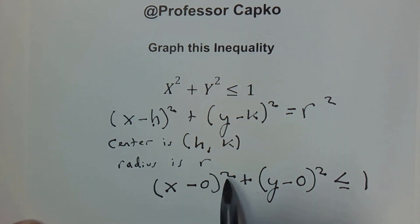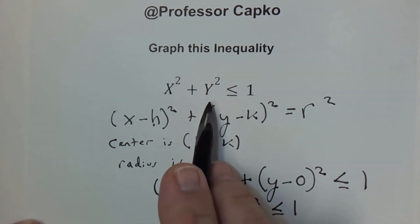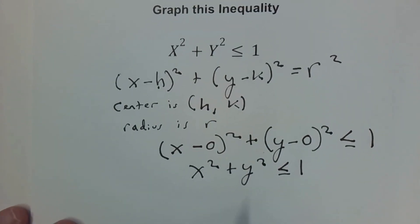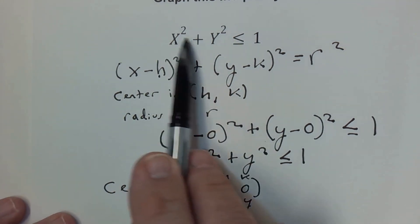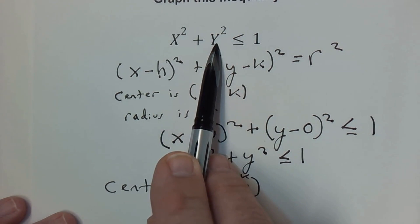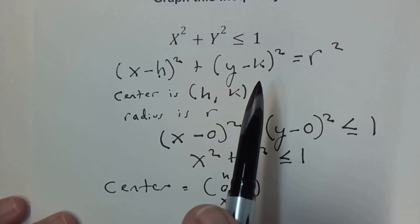So this tells us that our center is equal to (0, 0) because that's our h and that's our k, which is also our x and our y. So (0, 0) is our center because that is what would make this look like this with the x² + y².